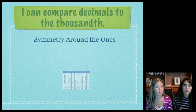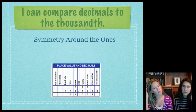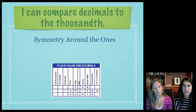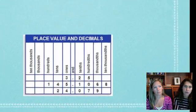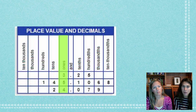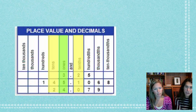First of all, just to wrap our brains around where these numbers and place values are, one way to think about it is that we have the symmetry around the ones. We have our ones and our decimal, but then surrounding that, the numbers are similar. So we have our tens and our tenths, and then our hundreds and our hundredths.